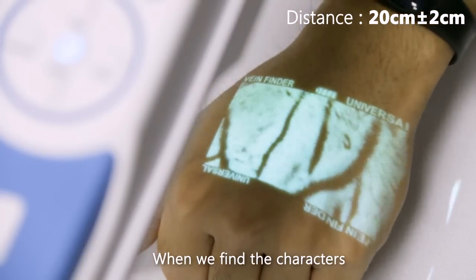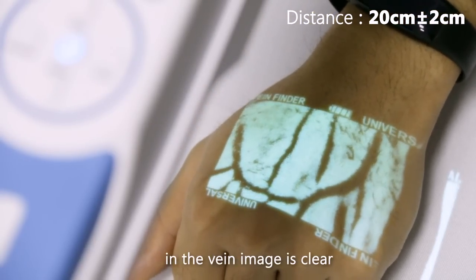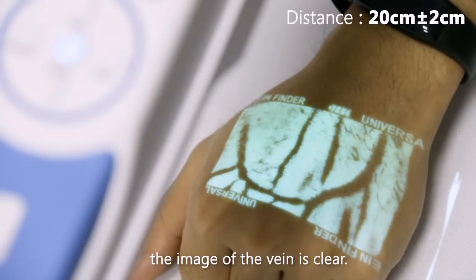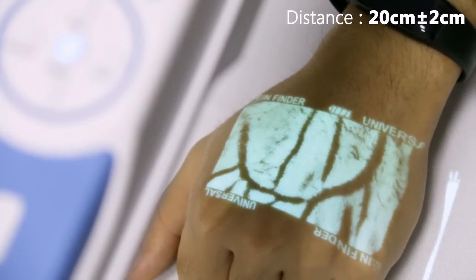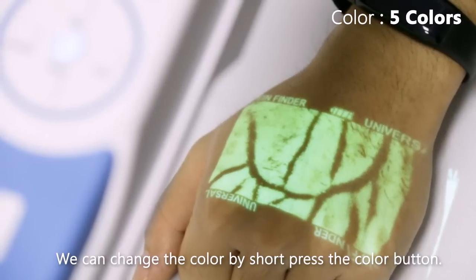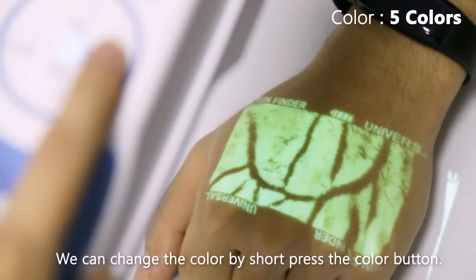When the characters in the vein image are clear and the vein image is clear, there are five colors available. You can change the color by short pressing the color button.